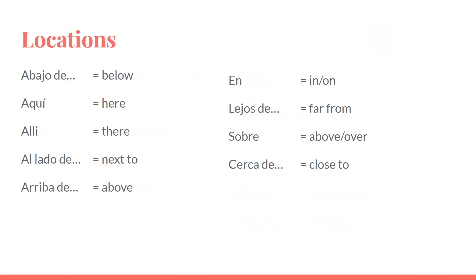Here are some more locations — some of these are the same, but these are the ones that are in your vocab list: abajo de, below; aquí, here; allí, there; al lado de, next to; arriba de, above; en, in or on; lejos de, far from; sobre, above or over; cerca de, close to.